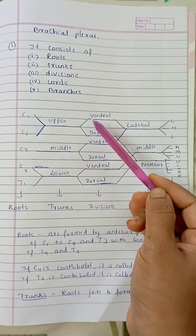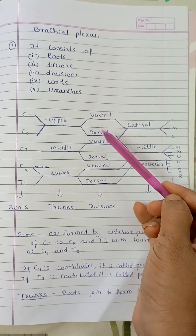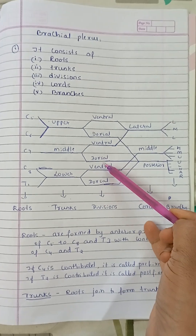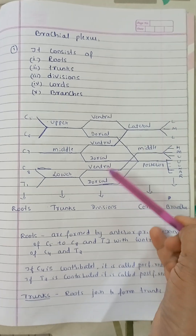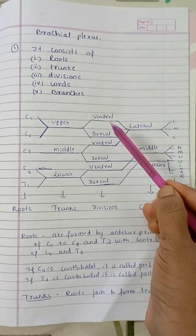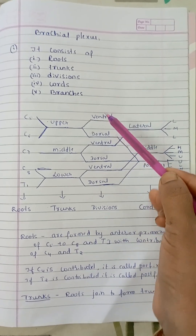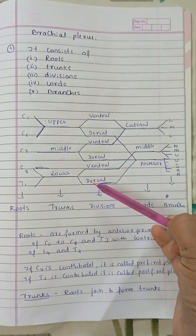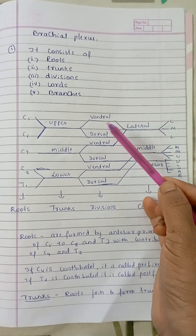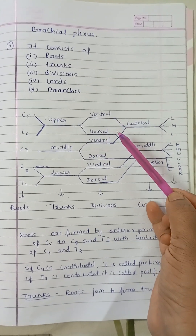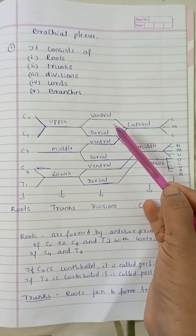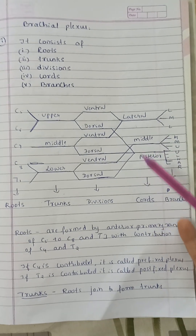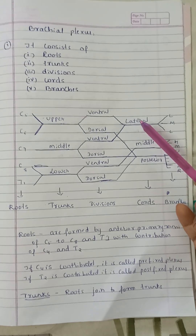These trunks further divide into divisions — a ventral division and a dorsal division. There are six divisions in total. These divisions join together and give rise to the cords, of which there are three types.